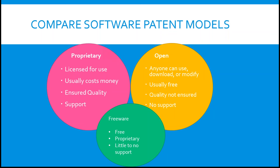On the proprietary side, you are licensed to use software and their work. Normally it costs money to obtain these licenses, though occasionally they might have free trials. You have insured quality, so if the software doesn't work, you have someone to contact to fix it. You have someone who is going to make sure the program does what it is intended to do. You also have support — if it does break, there is someone who can actually fix it for you and respond to your inquiry.